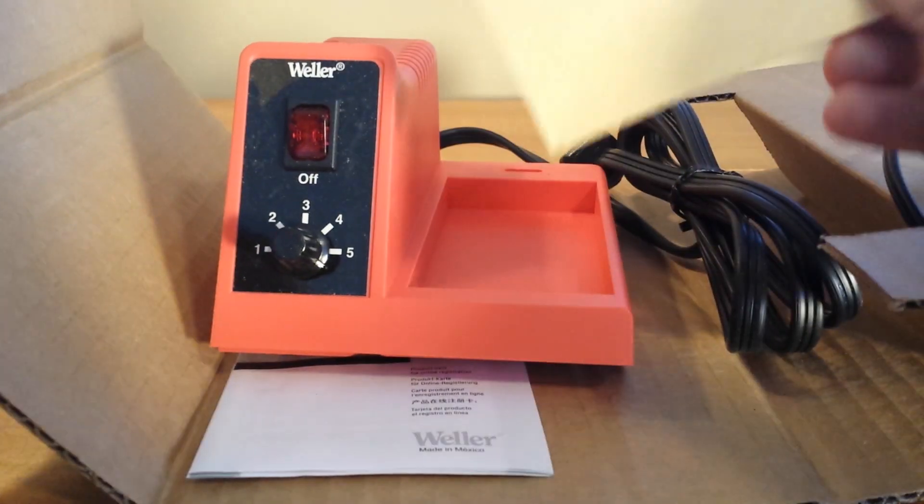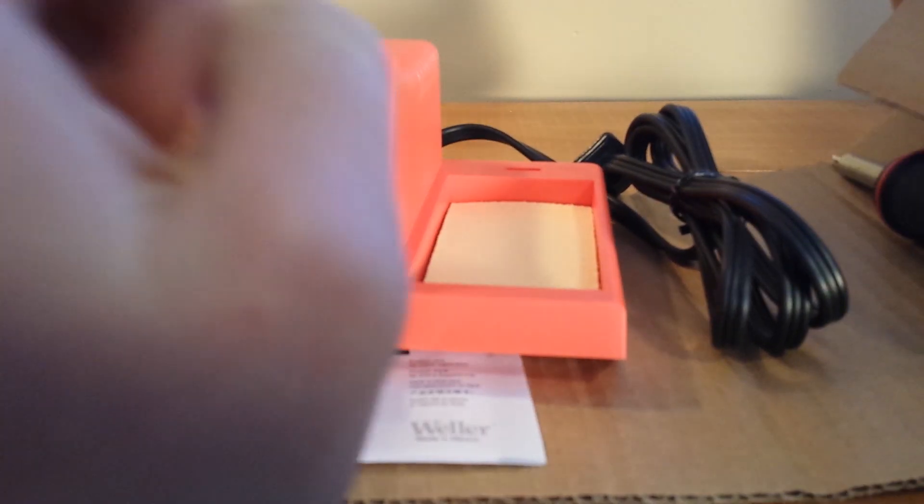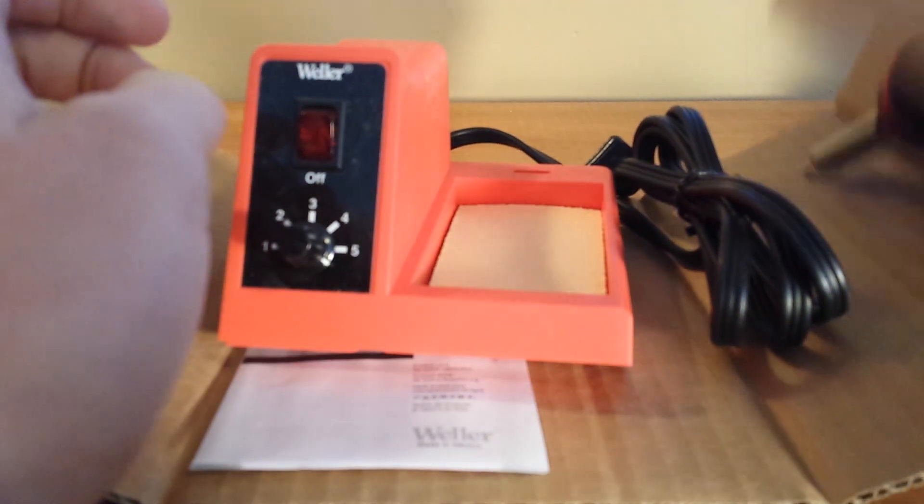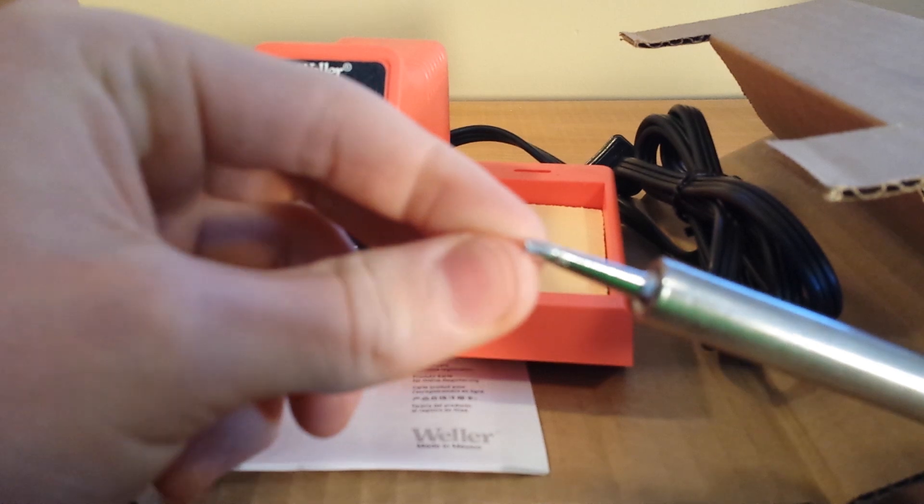Now here it is. That is a sponge, which is a very flat sponge. Very, very flat sponge. And the soldering iron, which is now rolling. And then that is the tip that comes with it.